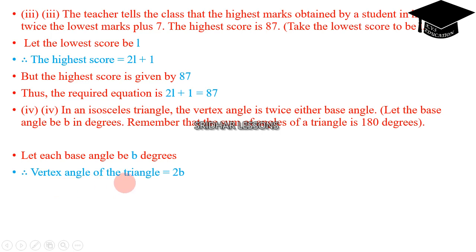Therefore, the vertex angle of the triangle is 2B, because it is twice. Sum of angles of a triangle is 180 degrees. So the required equation is: we have three angles in the triangle, B plus B plus 2B. This 2B is the vertex angle of the triangle. This is the equation: 4B equals 180.